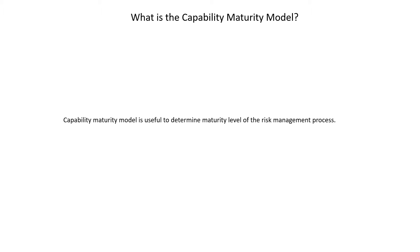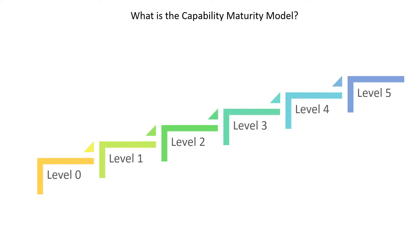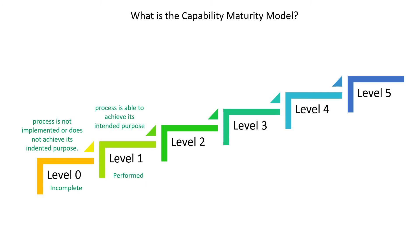The Capability Maturity Model is useful to determine the maturity level of the risk management process. This model assumes certain levels of processes. At the beginning, a process is incomplete and does not achieve its intended purpose. The next step is when the process is improved — it is performed and is able to achieve its intended purpose.